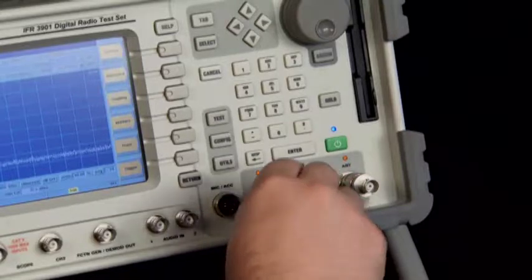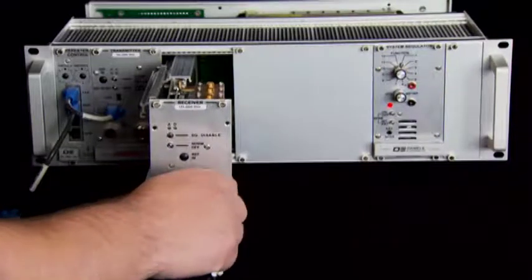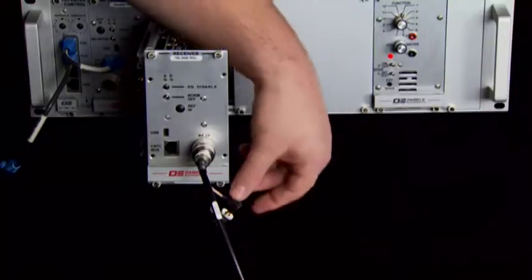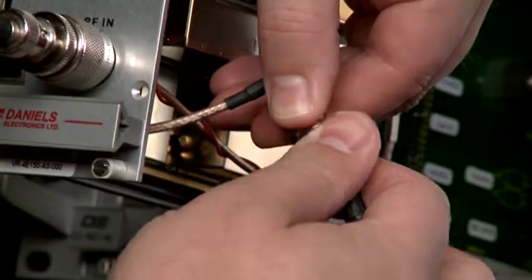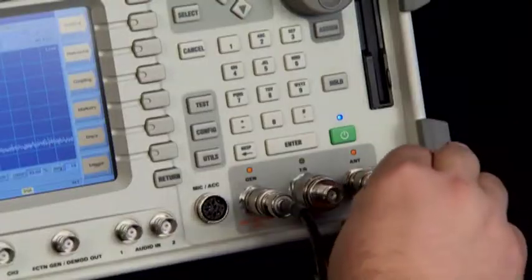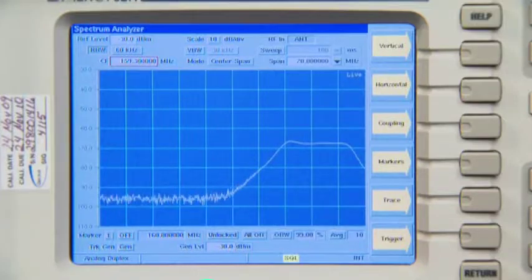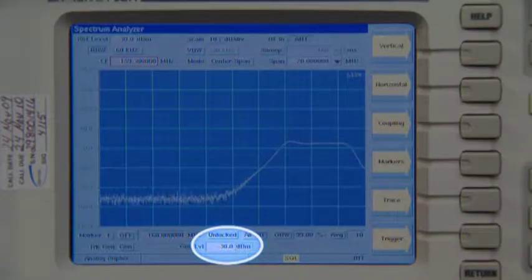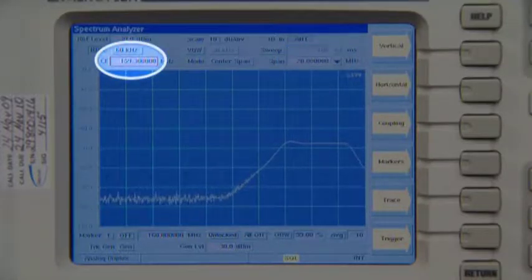Connect the tracking generator output to the RF input of the receiver. Connect the RF preselector output from the adapter to the input port of the spectrum analyzer. Set up the spectrum analyzer as shown, with the tracking generator output at minus 30 dBm, a span of 10 to 20 MHz, and the center frequency at the desired RF frequency.